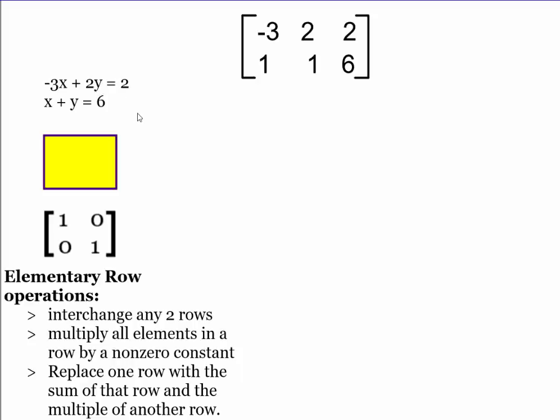I also can use elimination. I could multiply this whole bottom row by a negative 2 to give me negative 2x minus 2y equals negative 12, and add those together to cancel out my y's, see what x equals, and then come back and solve it for y.